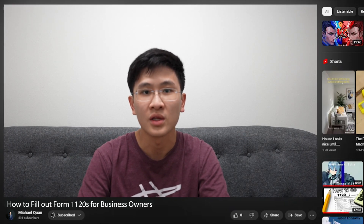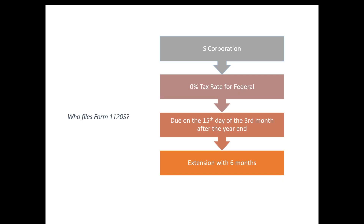Now let's begin the tutorial on how to fill out Form 1120S when you start a new business. A non-US individual cannot be a shareholder or hold shares in the S Corporation. An S Corporation can only have one level of stock — you can only have common stock, you cannot have preferred stock. One benefit of the S Corporation is a zero tax rate for federal purposes, and the tax return is due on the 15th day of the third month after the year end. Most S Corporations have a calendar year end, though under special circumstances some can apply for a fiscal year end.